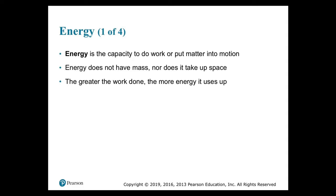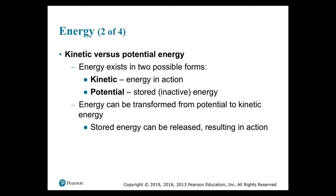Work is movement or a change in the physical structure of matter. Energy is the capacity to perform work — movement or physical change cannot occur unless energy is provided. Energy does not have mass, nor does it take up space. The greater the work done, the more energy it uses up. The two major types of energy are kinetic energy and potential energy. Kinetic energy is the energy of motion — energy that is doing work. When you fall off a ladder, it is kinetic energy that does the damage. Potential energy is stored energy — energy that has the potential to do work.